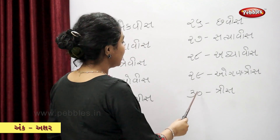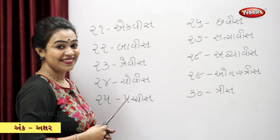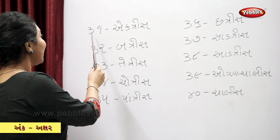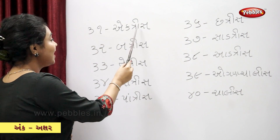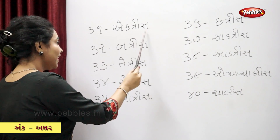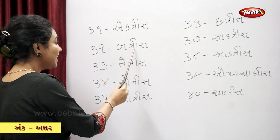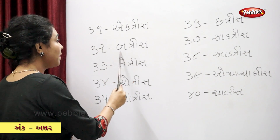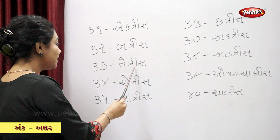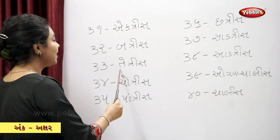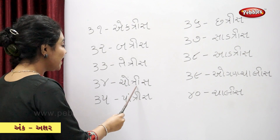T-ri-sa — thirty. Ekatris — thirty-one. Ba-tri-sa — thirty-two. Te-tri-sa — thirty-three. Can-tris — thirty-four. Chotris — thirty-five.